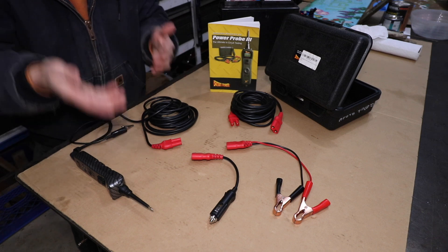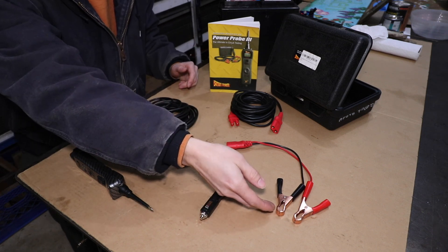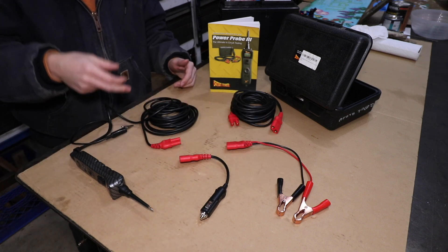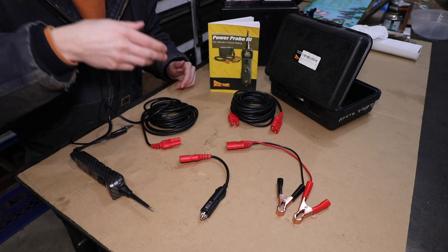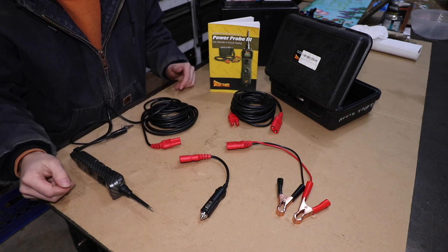And then you get two options as to how you want to supply power to the Power Probe. Either a cigarette lighter or alligator clamps, which will clamp directly onto the battery. Typically, I like to use the alligator clamps because on most modern cars, the power supplied to the cigarette lighter will time out after you shut the key off for a short period of time.